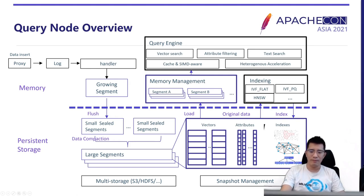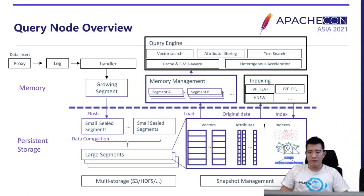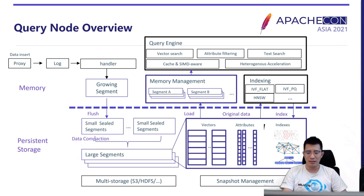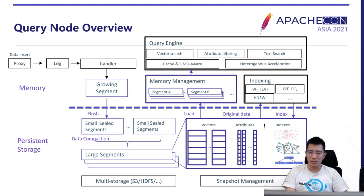Taking a closer look at each segment, each data entry may contain one vector field and multiple attribute fields. The attribute fields refer to traditional structured data. Both vectors and attributes are stored in a columnar fashion — data in the same field is stored together, so we can make scans faster. When segments reach the predefined size, we stop merging and build indexes on them to facilitate searching. We support multiple vector index types, including quantization-based, graph-based, and tree-based indexes. Data query requests are directed to query nodes, and we implement all search logic and corresponding optimizations in the query node.